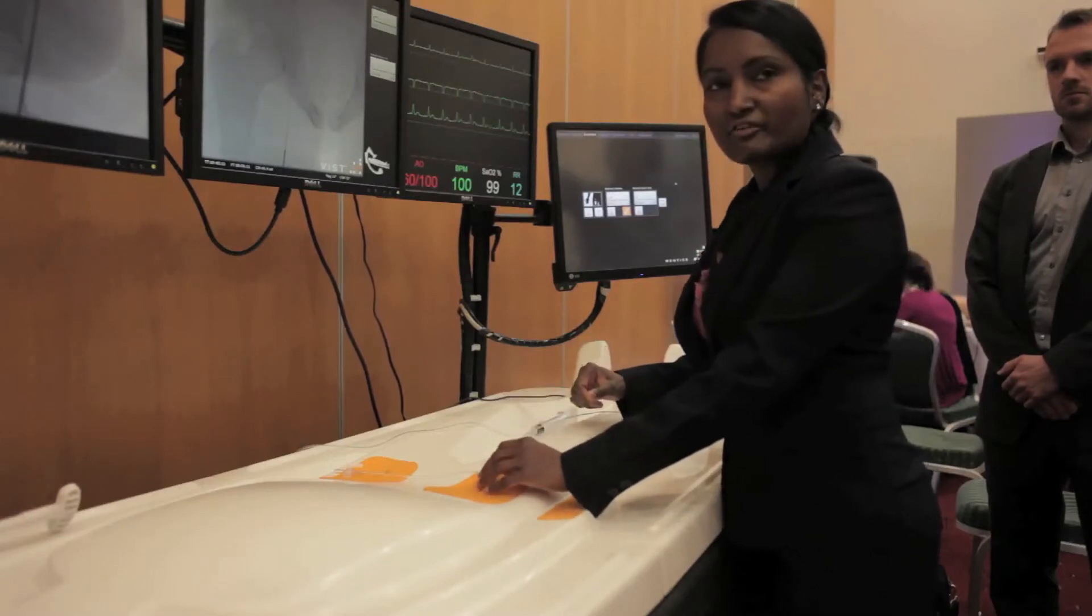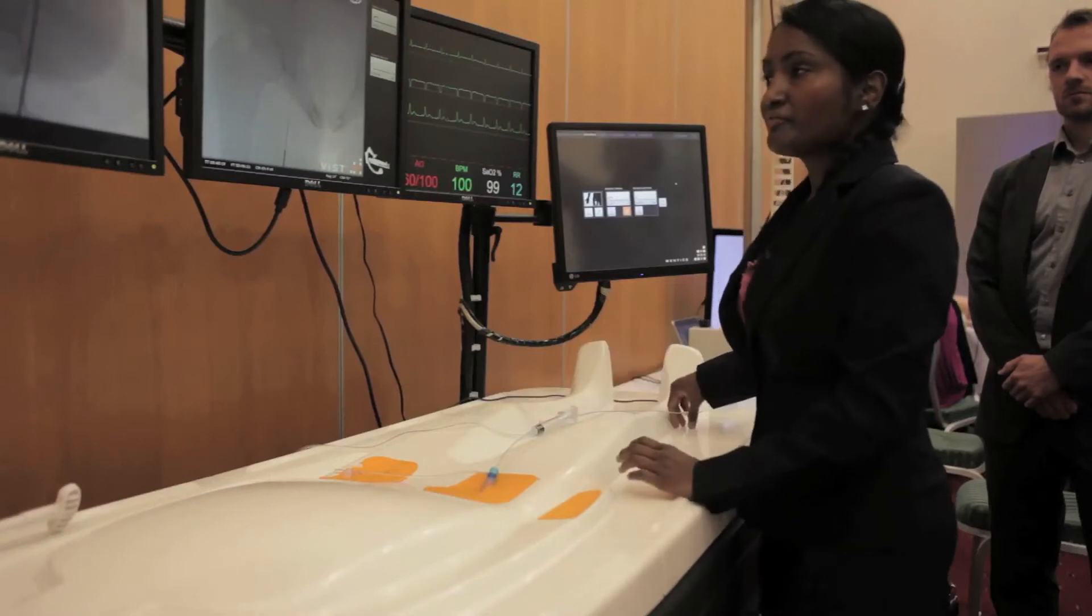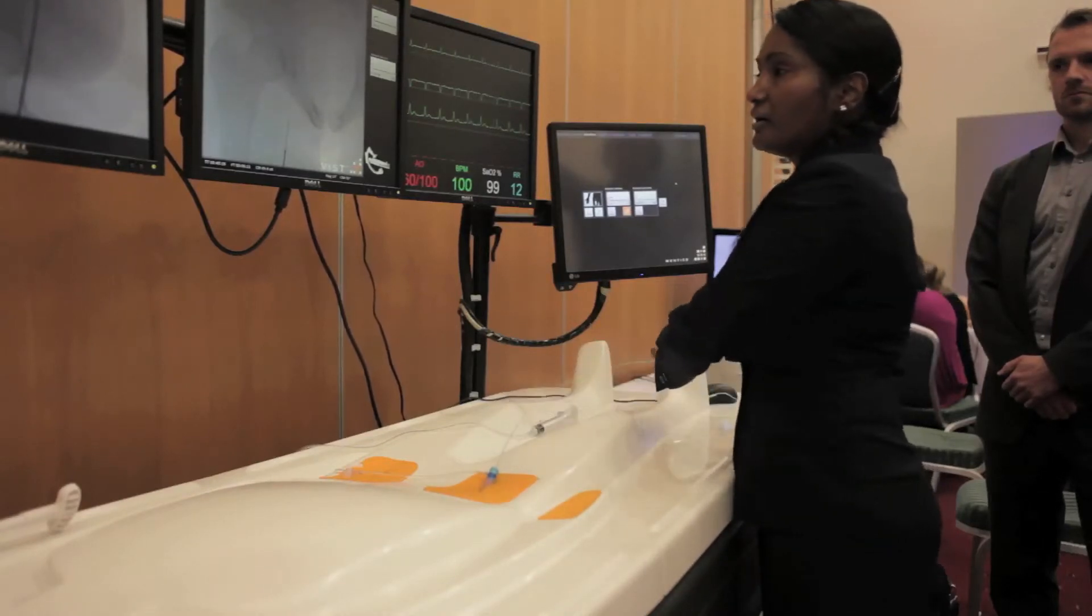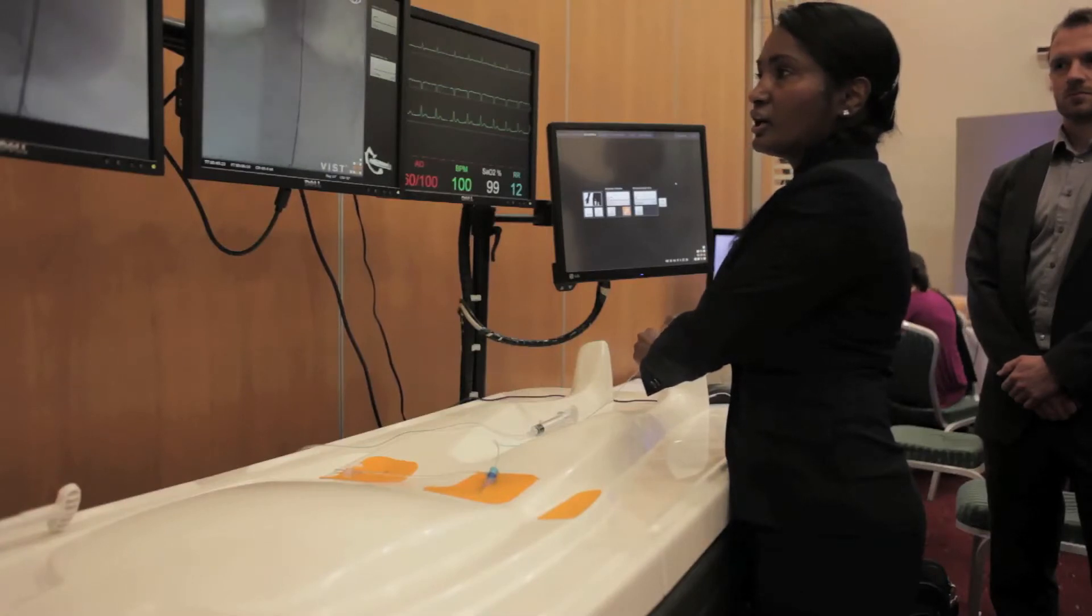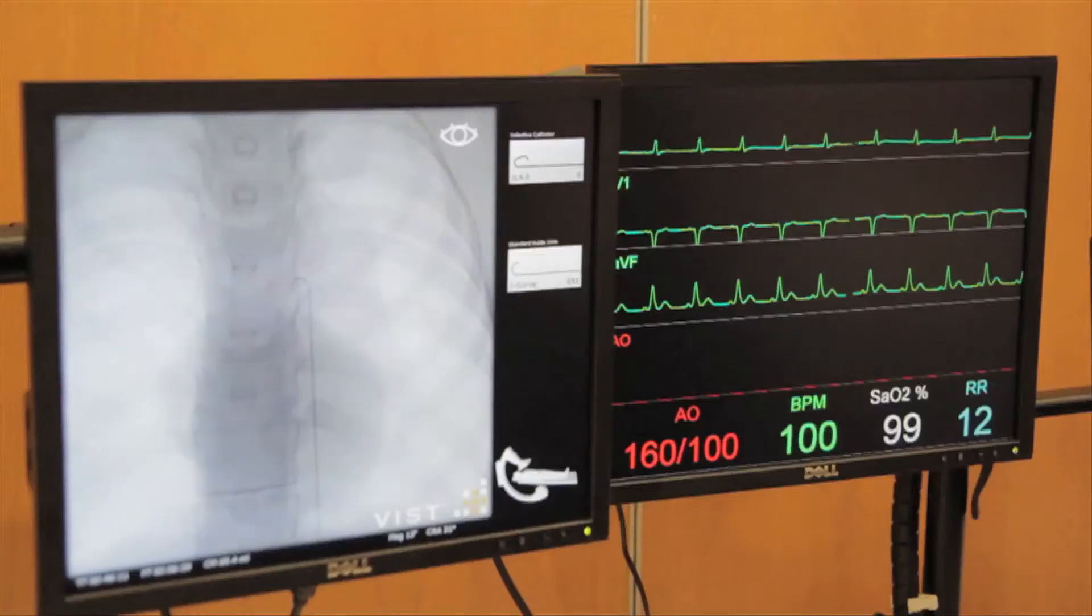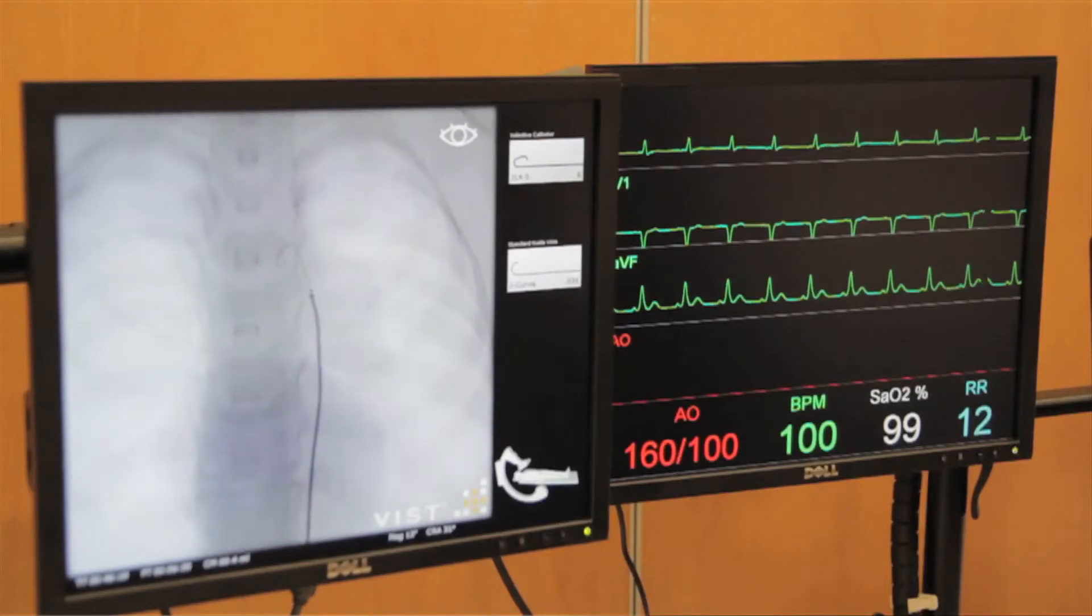We already have obtained a femoral access and we are about to take a wire from the femoral artery into the aorta and then into the coronary sinus. So you advance the wire into the aorta, and then the catheter runs over the wire into the ascending aorta and then into the coronary sinus.